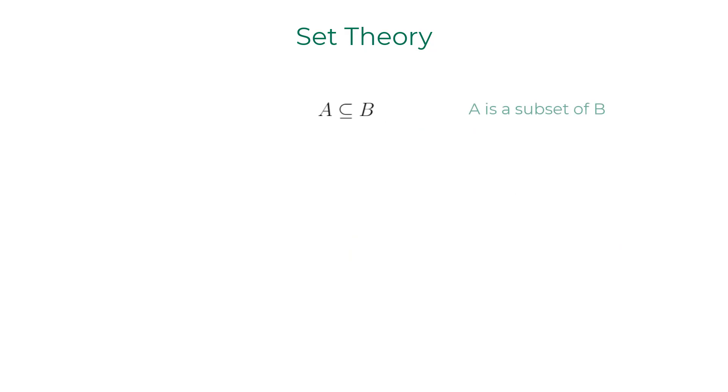For two sets A and B, we can say that A is a subset of B if every member in A is also a member of B. According to this definition, a set is a subset to itself. If A is a subset of B and not equal to B, A is called as proper subset of B and it's denoted that way.